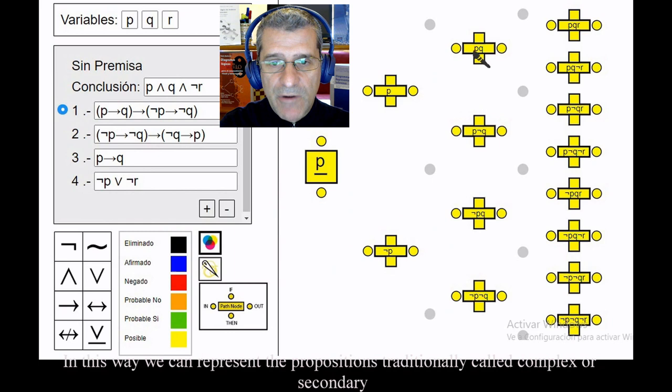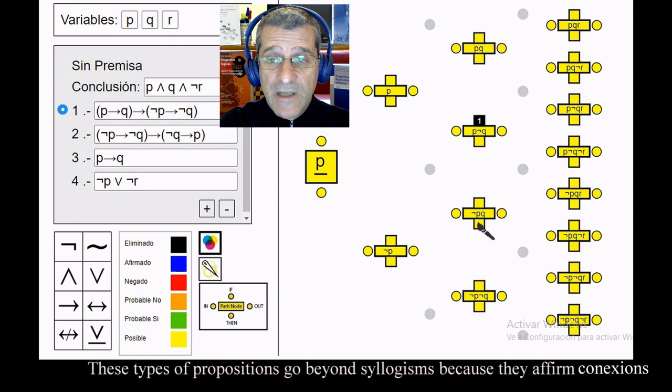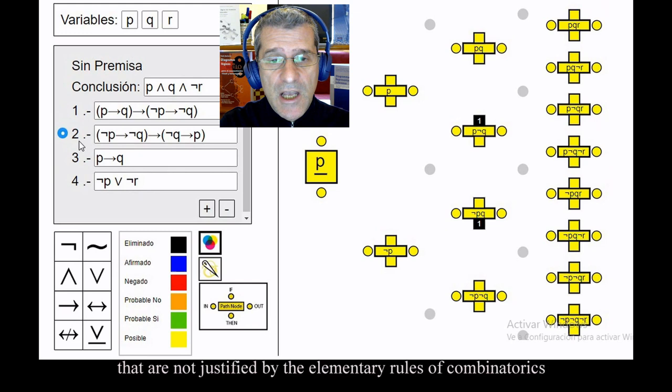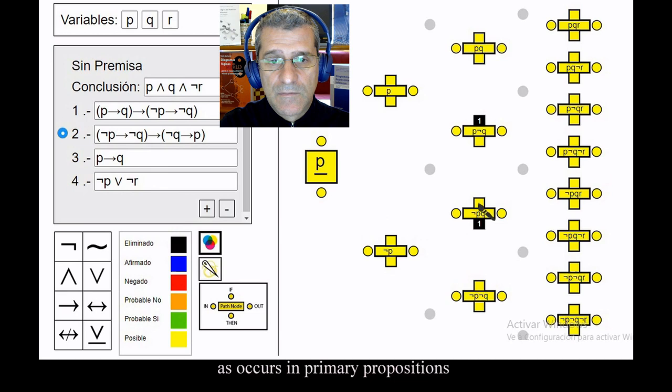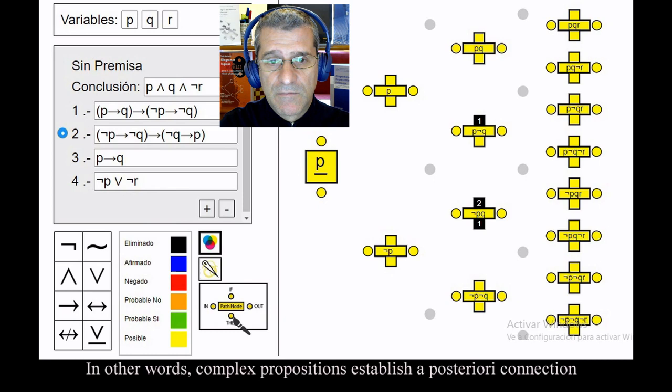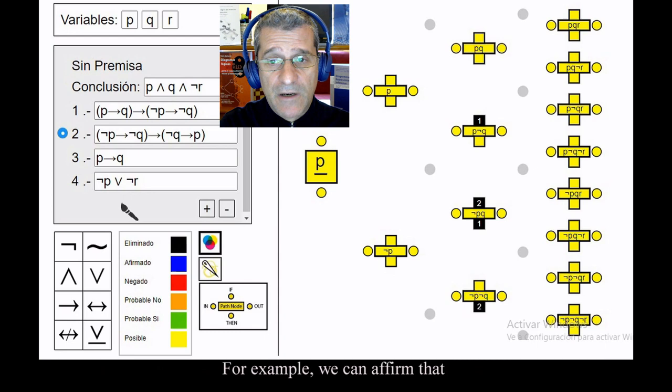This type of proposition goes beyond syllogisms because they affirm connections that are not justified by the elementary rules of combinatorics as occurs in primary propositions. In other words, complex propositions establish a posterior connection between nodes that are not on the same network path. For example, we can affirm that if there are students who work, there are students who do not work.